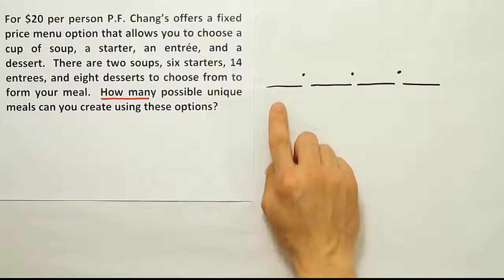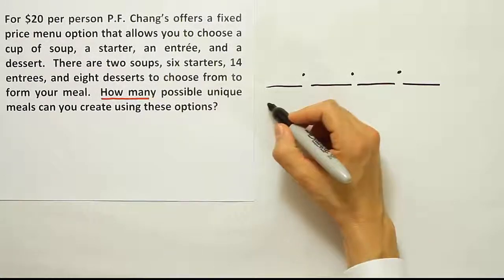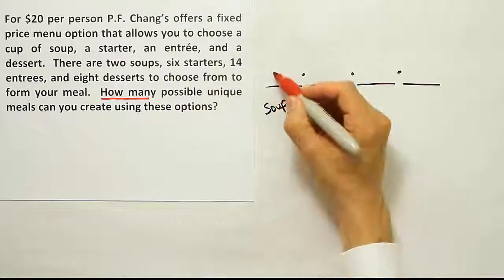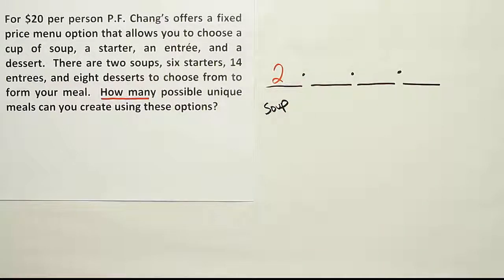So what we have to do is ask yourself, for the soup, how many choices are there for the soup? It says there are two soups to choose from. So we'll put a two in that location representing two different options for the soup.